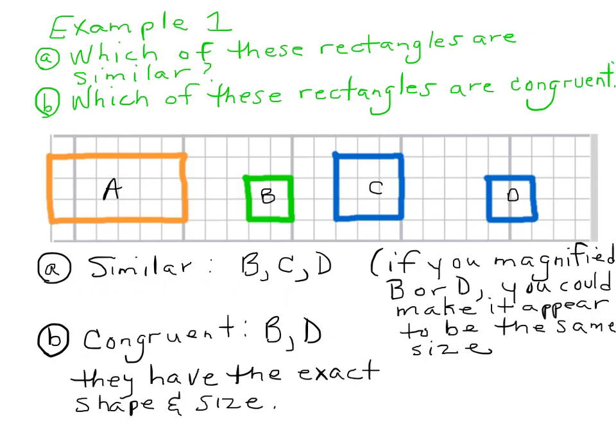So, let's take a look at similar. If we look at B and we look at D, we can see that they are similar. We can see that they are also congruent. One, two, three, four little squares. One, two, three, four little squares. If we look at C, we can see that it is similar, okay, because it is still a square.